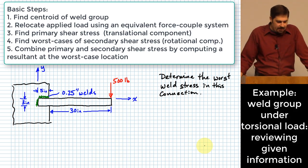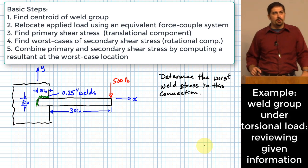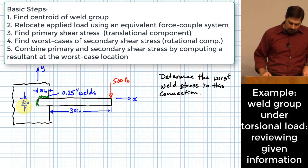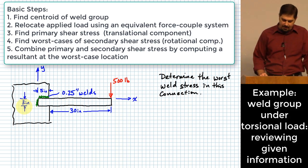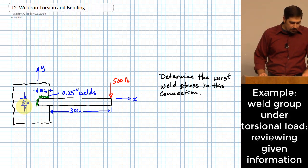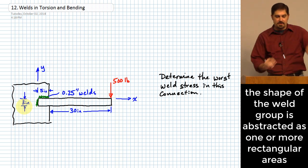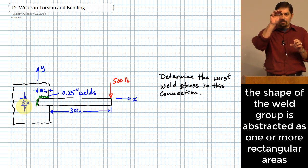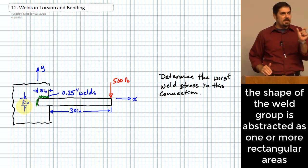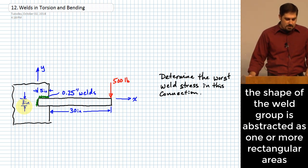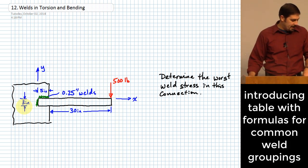The first thing we need to do is figure out where exactly the centroid of the weld group is. What we're dealing with here is a piece welded with quarter-inch welds to another piece. Those welds are along the top and along one edge — the left edge. We typically abstract these welds in our minds and think of them as rectangles — a rectangular piece of weld here and another rectangular piece there. The width would be the size of the weld and the length is given on the view shown.